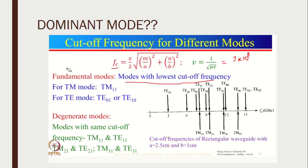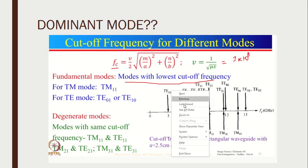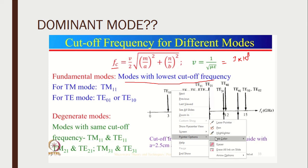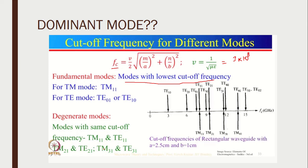Degenerate modes are modes which have the same cutoff frequencies. For example, TE11 and TM11 both have cutoff frequencies lying between 6 and 9 GHz, so they are called degenerate modes. Similarly, TE21 and TM21, and also TM31 and TE31, are degenerate modes because they share the same cutoff frequencies.